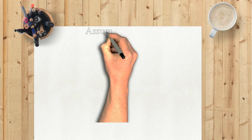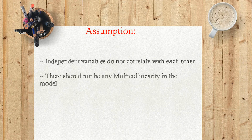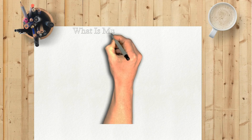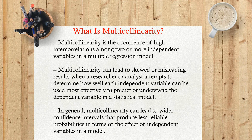Multicollinearity. The assumption is that independent variables do not correlate with each other — there should not be any multicollinearity in the model. Multicollinearity is the occurrence of high intercorrelations among two or more independent variables in a multiple regression model. It can lead to skewed or misleading results when a researcher attempts to determine how well each independent variable can be used to predict or understand the dependent variable in a statistical model.